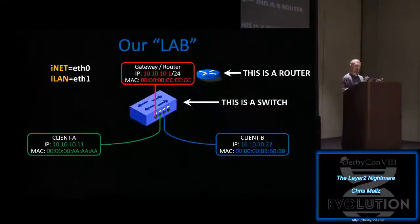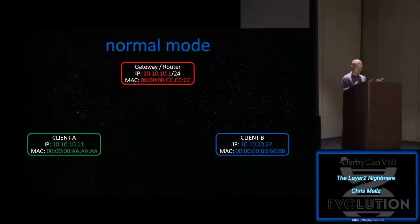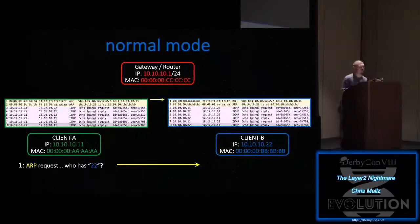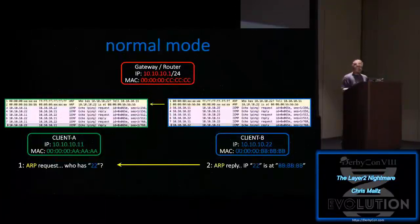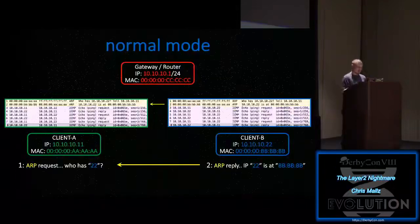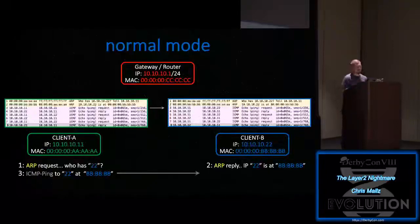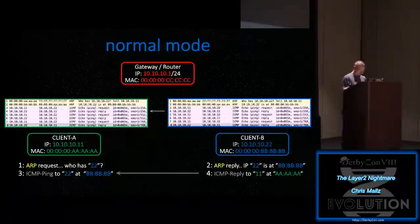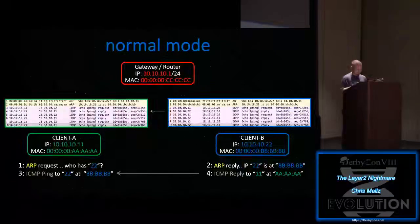Let's look at what a normal ping looks like on a standard switch. In normal mode, Client A wants to ping Client B. First it ARPs out: 'Who has IP 10.10.2.2?' Client B sees it and responds with its MAC address BBB. Then the ping is sent directly to Client B. If this goes into a firewall instead of a switch, you won't see any of this traffic at all. Think of it more like SMB rather than just a ping — Client B then replies back.